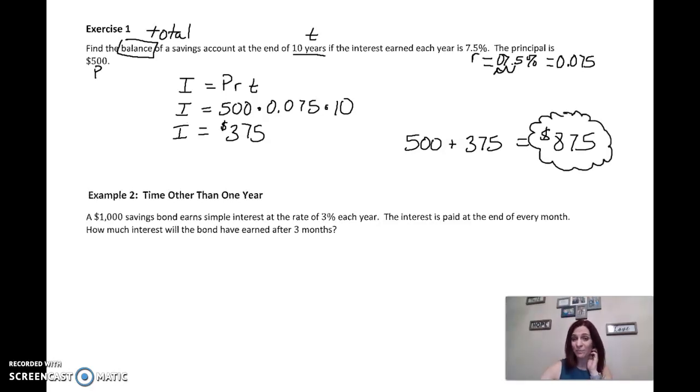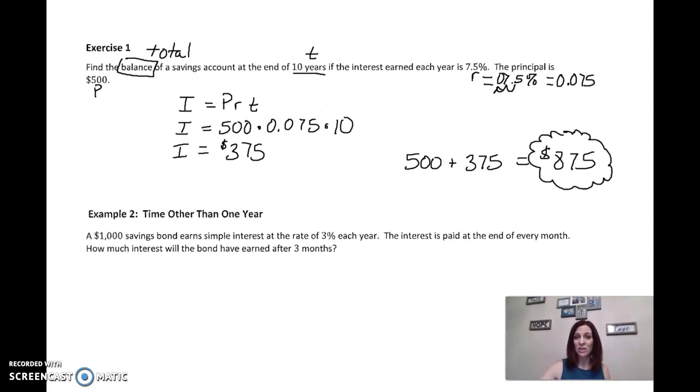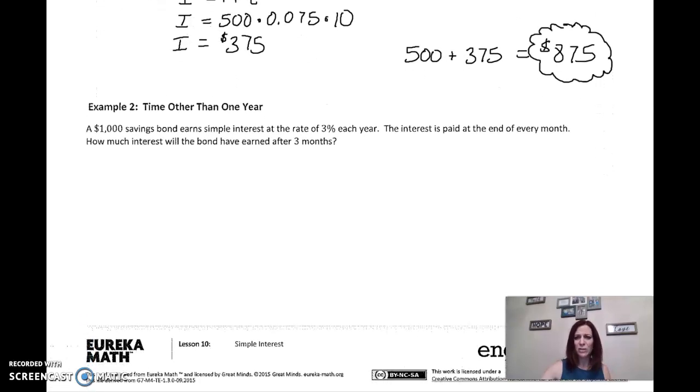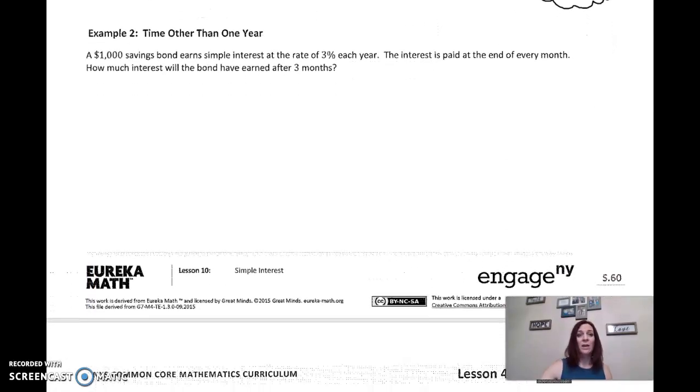All right. So again, read it carefully. Remember, we have to pay attention to that our rate and our T, our R and our T are compatible, meaning if it's a yearly interest rate, we have to be putting in years. We have to pay attention if they want interest or if they want balance. So let's look at another example. Still using always that same formula. A $1,000 savings bond earns simple interest at the rate of 3% each year. The interest is paid at the end of every month. How much interest the bond have earned after three months?